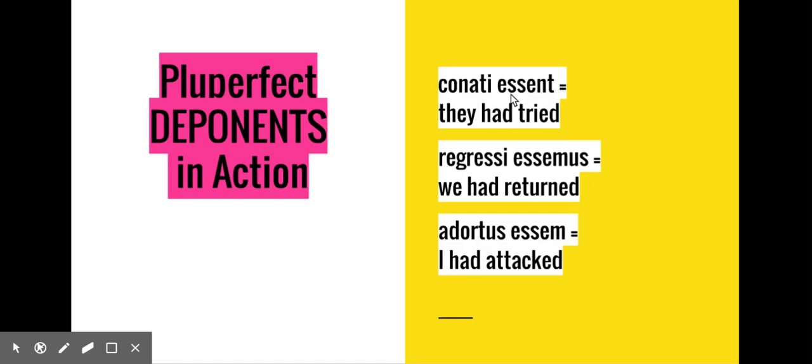Here we marry the passive forms with active translations in the realm of deponent verbs. So pluperfect deponent verbs look passive, but they get translated actively. Conati essent, they had tried. Regressi essemus, we had returned. Adortus essem, I had attacked.